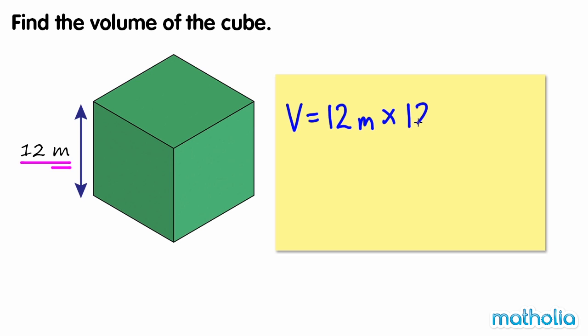Using a calculator, 12 meters by 12 meters by 12 meters equals 1728 cubic meters. So the volume of the cube is 1728 cubic meters.